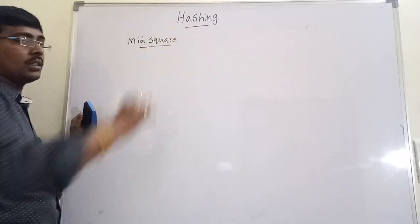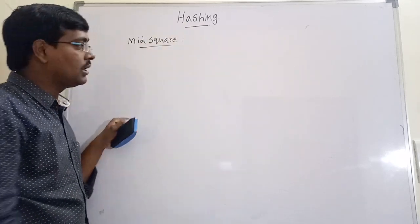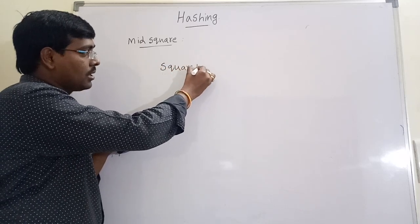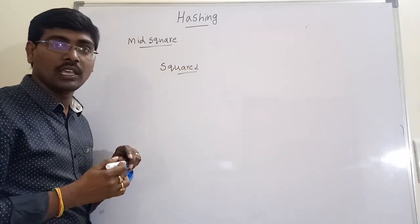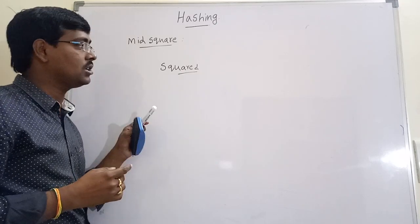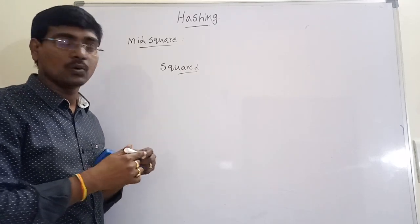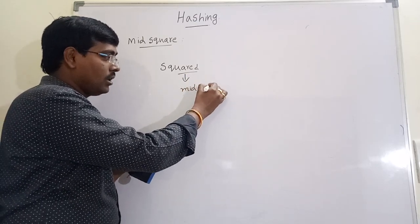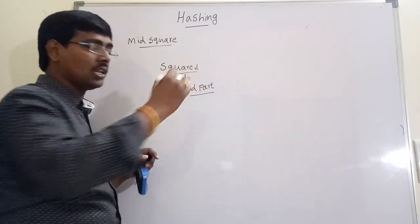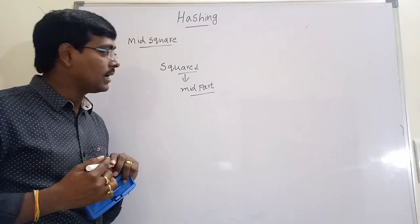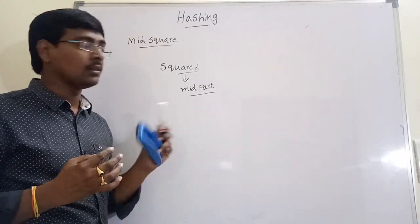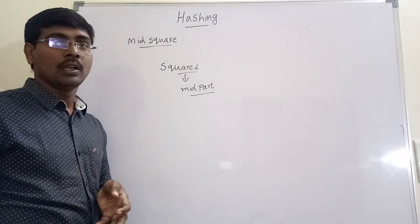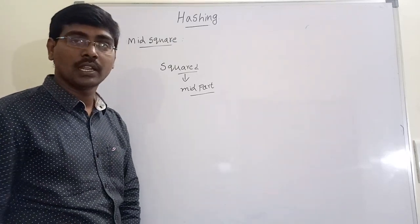The next method is the mid-square method. In the mid-square method, whatever key we want to place into the hash table, that key is to be squared. After squaring, we consider the middle part of the squared value. At the time of consideration, check the address width of the hash table — for example, if table size is 10 or 1000.